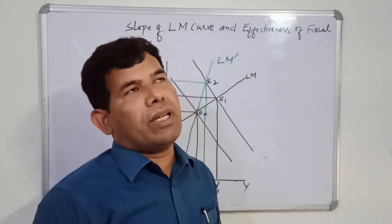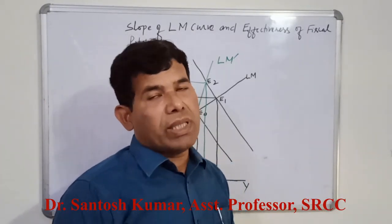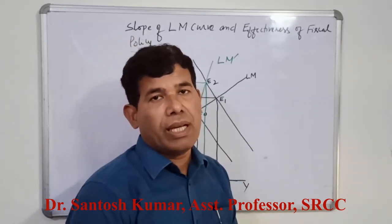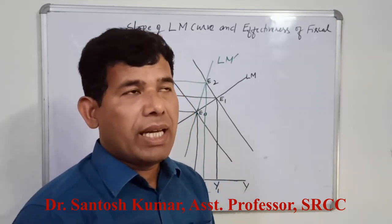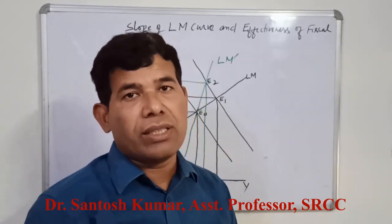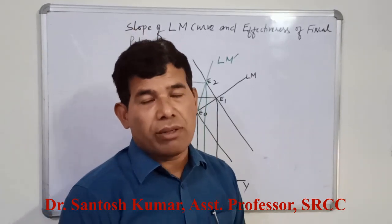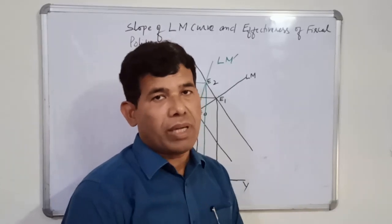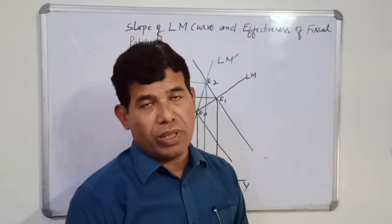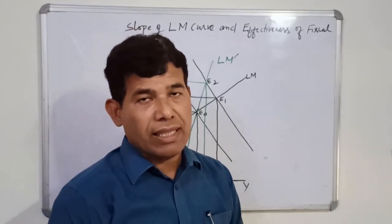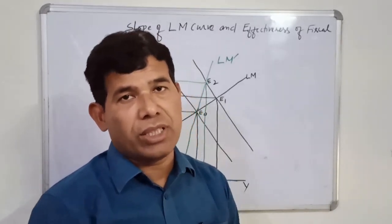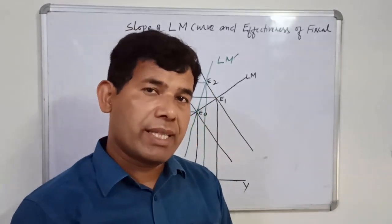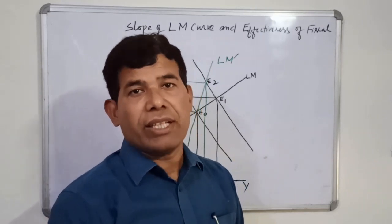Hello friends. You must recall from the discussion what determines the slope of the LM curve and what determines the slope of the IS curve. The factors which affect the slope of the LM curve are two: one is K and another one is H. K is the responsiveness of money demand to change in income, and H is the responsiveness of money demand to change in interest rate.